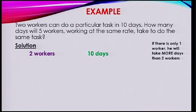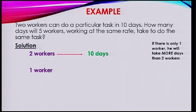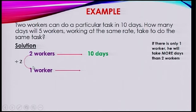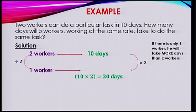Well, we know that 2 workers are taking 10 days. If we want to know for one worker — 2 to become 1, we need to divide it by 2. So if we are dividing one quantity by 2, we need to simply multiply it by 2. So one worker will take 10 times 2, which is 20 days.